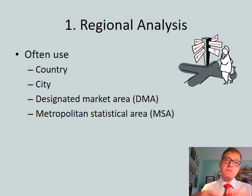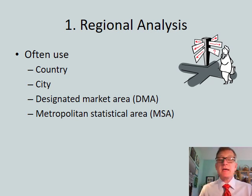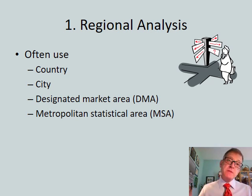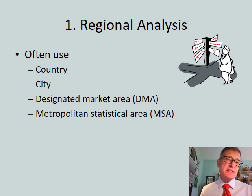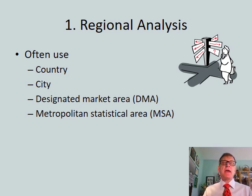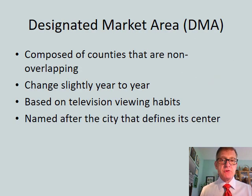Where in the central Ohio area are we going to build our new location? It might be Columbus, it might be Worthington, etc. Then we have things called designated market areas, or DMAs, and metropolitan statistical areas, or MSAs. These have acronyms attached to them, and the book covers what they are with examples.